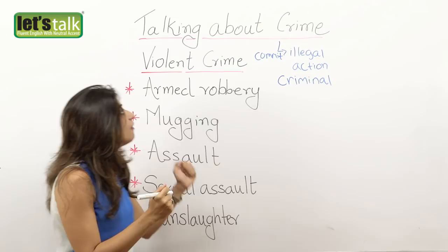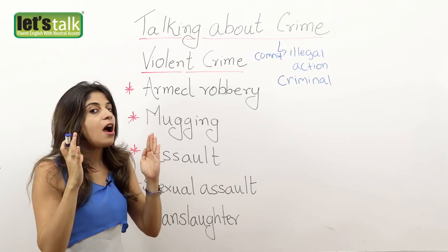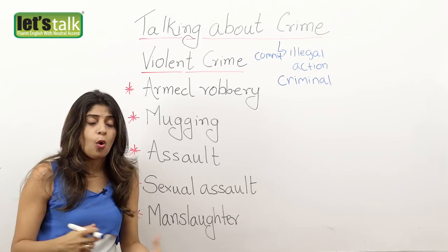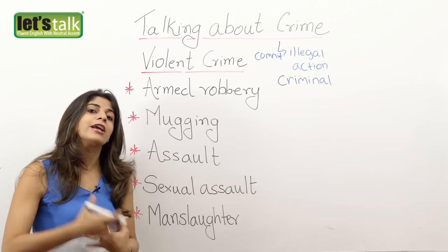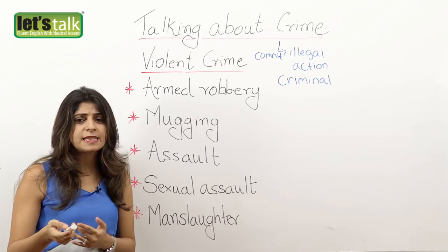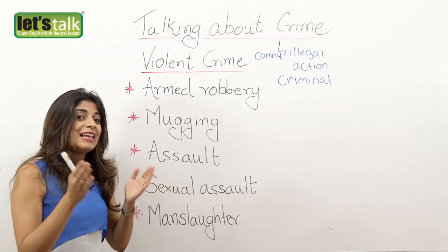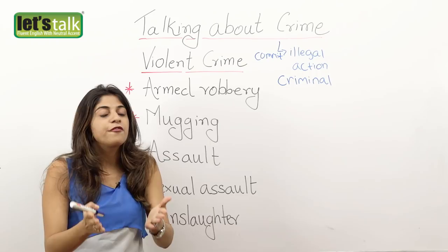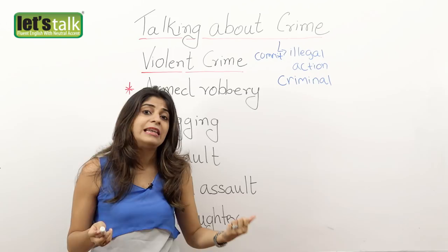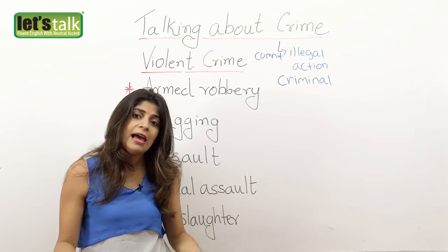Now we are gonna look at a couple of crimes. We have violent crimes, and the first one is armed robbery. When a robber or a group of robbers try to rob a store or a bank and they are carrying weapons — such as a gun or knives — and they threaten or hurt people with these arms, that is called armed robbery. For example, you can say there was an armed robbery at the bank next to my house, meaning the robbers robbed the bank and they were carrying weapons.